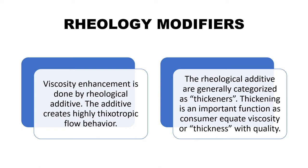Rheology modifiers are generally categorized as thickeners — all rheology modifiers are basically comprised of a category known as thickeners. Thickening is an important function, as the consumer equates viscosity or thickness with the quality of the product. So sometimes thickness is very much desired in the formulation, and these thicknesses can be incorporated by the addition of rheology modifiers, which alter the flow properties of the substance.